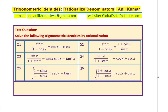The questions are: Question 1, sin x over (1 minus cos x) equals cot x plus cosecant x. Question 2, sin x over (1 minus cos x) equals (1 plus cos x) over sin x. Question 3, sin x over (1 plus sin x) equals tan x·secant x minus tan squared x. Question 4, tan x over (1 plus secant x) equals negative cotangent x plus cosecant x. Question 5, square root of (1 minus cos x) over (1 plus cos x) equals cot x minus cosecant x.